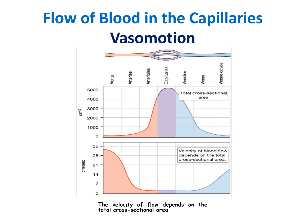Blood flow in capillaries is characterized by being very slow, ranging between 0.5 to 1 millimeter per second, due to the large total cross-sectional area of the capillary bed, which gives enough time for the exchange of material between the blood and the interstitial fluid. Blood flow is also intermittent due to vasomotion — an alternating contraction and relaxation of the metarterioles and precapillary sphincter in response to metabolites.